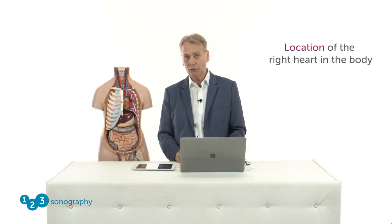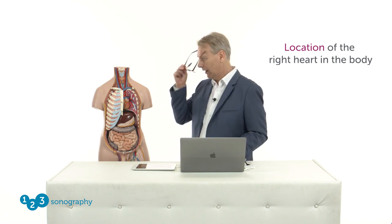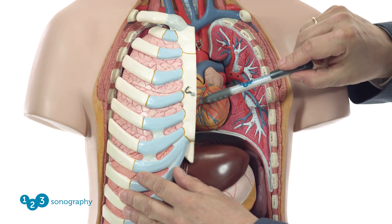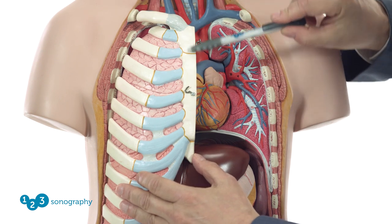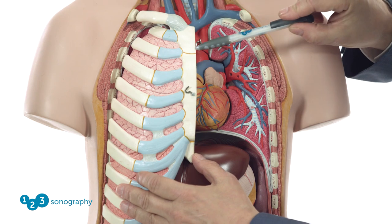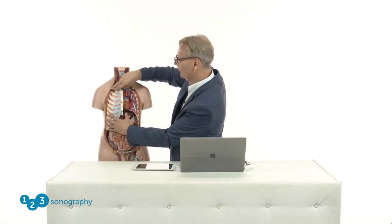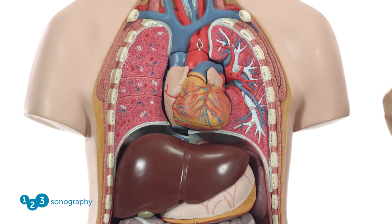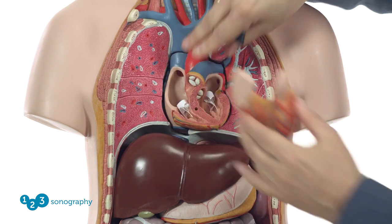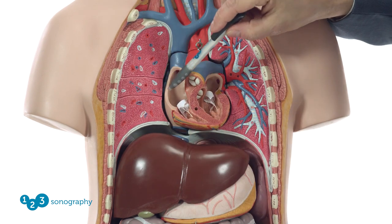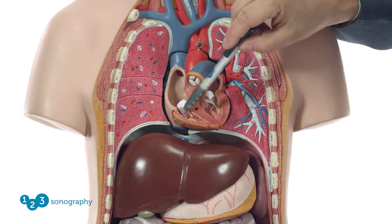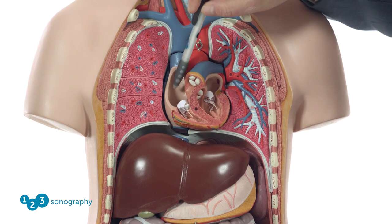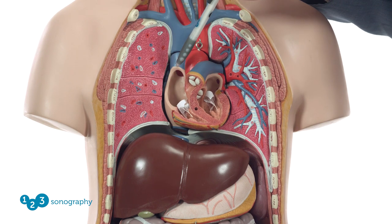But where is the right heart actually located in the chest? Well, anterior. As you can see here on this model, this is the right heart, and if you look closely, you will see that much of the right heart is actually hidden behind the sternum. Let's remove the lung and take a closer look inside the chest. If I open up the model, you can see that the right heart is actually located here in the midline, and that much of the right heart is hidden behind the sternum.